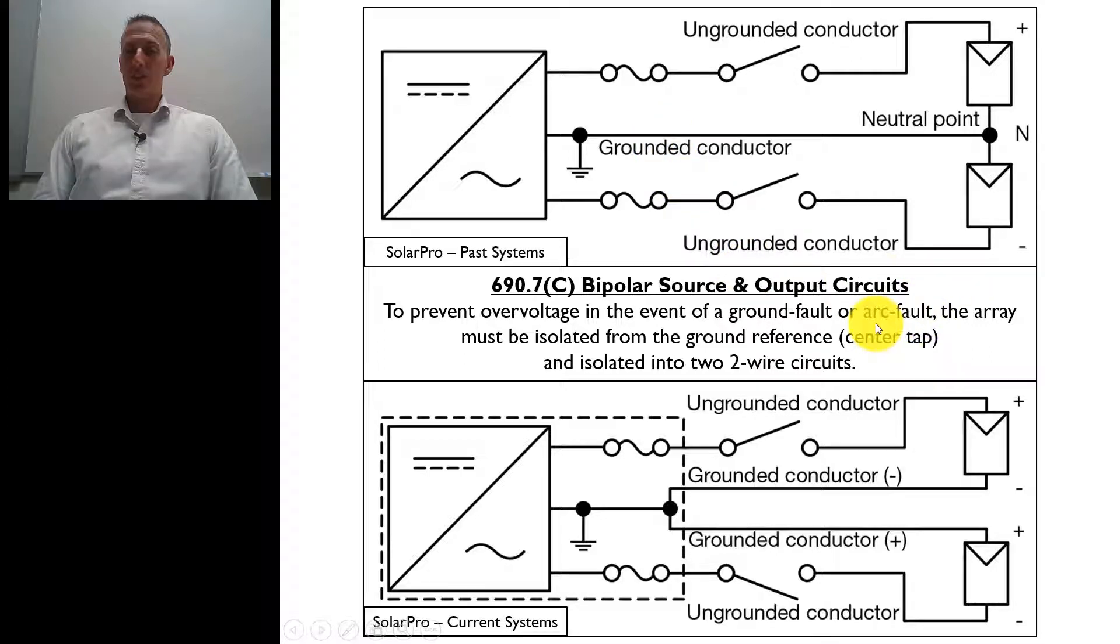What the code says is that the array, this array right here must be isolated from the ground reference center tap. So in older systems, what they typically did is they had that center tap or that neutral point, that connection, they were typically doing them inside the array.